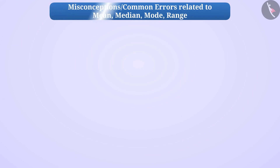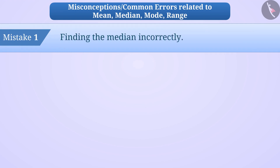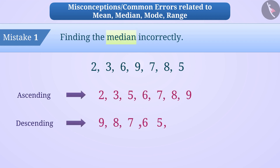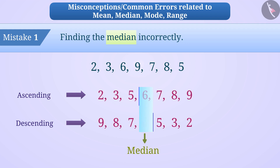Mistake 1: finding the median incorrectly. To find the median, some children identify the median without arranging the data in order. They might think 9 is the median, but this is a misunderstanding. Only after arranging the data in ascending or descending order can we find the median. After arranging the data, the middle term is 6, so 6 is the correct median.